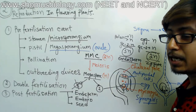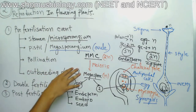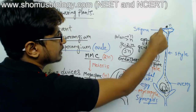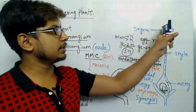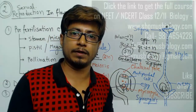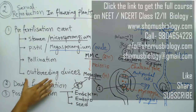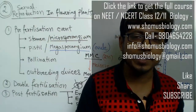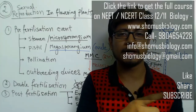We need both pollen grain and egg for the double fertilization event. Later we will see how the pollen grain makes contact with the stigma of the female flower — this process is known as pollination. We will see pollination and the types of pollination in detail, and also how plants prevent self-pollination, why self-pollination is bad, and why cross-pollination is a better way to reproduce. So stay tuned and watch the series.